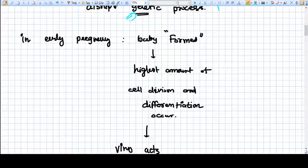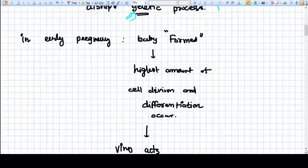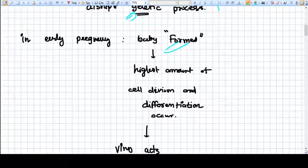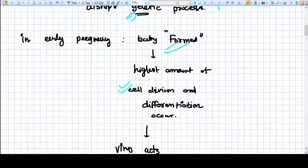In early pregnancy, especially in first trimester, the baby is being formed. The highest amount of cell division and differentiation is occurring at that time.